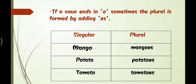Moving on to the next rule: if a noun ends in O, the plural is sometimes formed by adding ES. For example, mango becomes mangoes, potato becomes potatoes, and tomato becomes tomatoes.